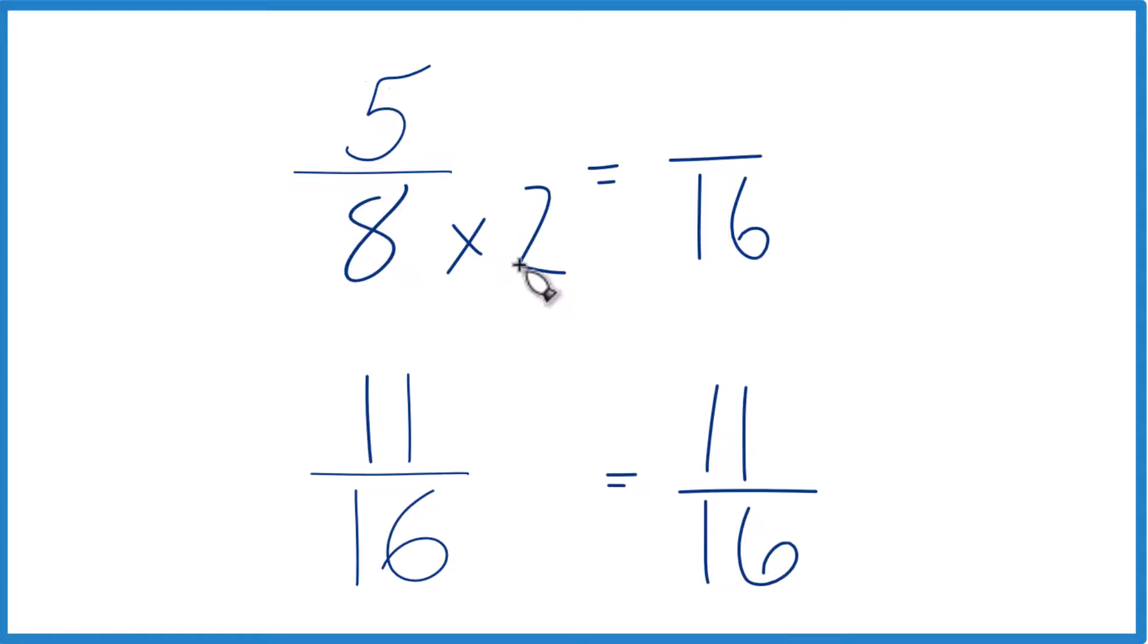I can't just multiply the denominator by 2, though. I also have to multiply the numerator because 2 over 2 is 1. So I'm just multiplying by 1. I don't change the value, just the representation. 5 times 2, that's 10.